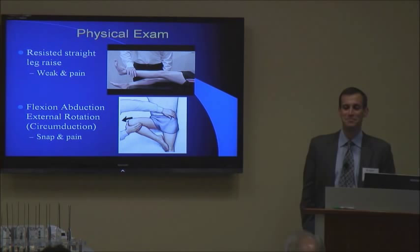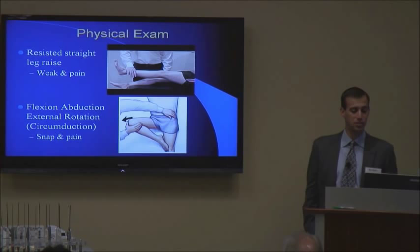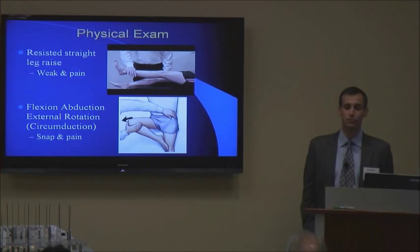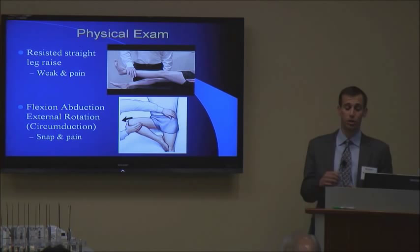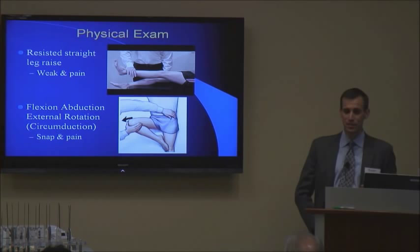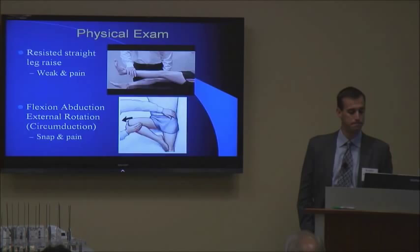For physical exam findings, the two tests I tend to use most regularly are the resisted straight leg raise and the flexion-abduction external rotation — basically a circumduction. With the resisted straight leg raise, patients will usually report pain and some weakness on that side. With the flexion-abduction external rotation, going from a flexed, abducted, externally rotated position and circumducting the leg back to full extension, you can frequently elicit that internal snapping. I'll place my hand right over the groin to confirm the snapping is internal, and you'll feel the iliopsoas popping over the anterior aspect of the femoral head.